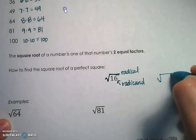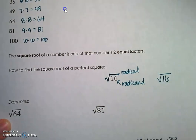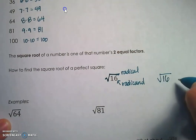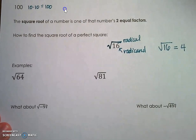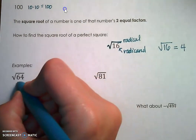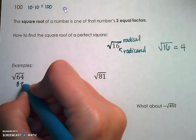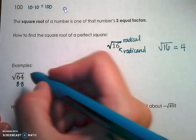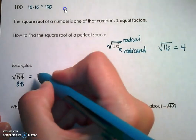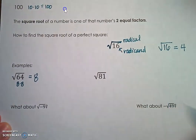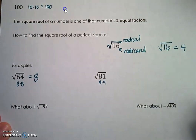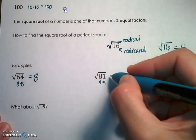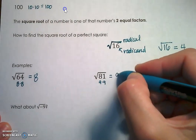The square root of 16 is one of the two equal factors. The two equal factors of 16 are 4, so the square root of 16 is 4. The square root of 64 is one of the two equal factors — 8 times 8 — so the square root of 64 is 8. The square root of 81 is going to be one of the two equal factors, 9 times 9, so the square root of 81 is 9.